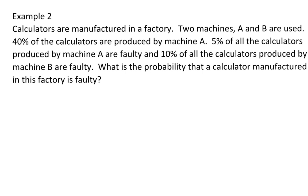Example two. Calculators are manufactured in a factory. Two machines, A and B, are used. Forty percent of the calculators are produced by machine A. Five percent of all the calculators produced by machine A are faulty, and ten percent of all the calculators produced by machine B are faulty. What is the probability that a calculator manufactured in this factory is faulty? Here we have conditional outcomes, because the percentage of faulty calculators produced depends on what machine is used.